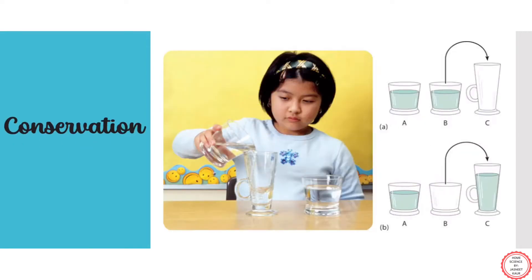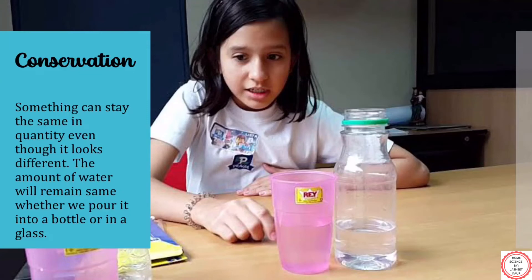Moving on to conservation. Conservation is the understanding that something stays the same in quantity even though its appearance changes. In the pre-operational stage, the child lacks this understanding — the child used to believe that the bigger the object, the more quantity it will have. We discussed examples of a glass and a beaker. But as logical thinking develops in the concrete operational stage, the child knows that redistributing materials does not affect its mass, number, volume, or length. Most children aged 7 can answer this correctly.